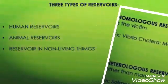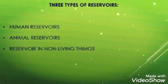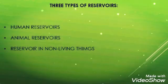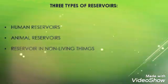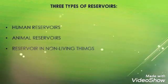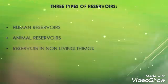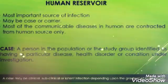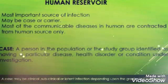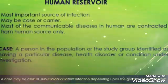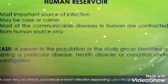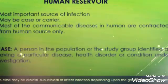There are mainly three types of reservoirs: human reservoirs, animal reservoirs, and reservoirs in non-living things. A reservoir is where bacteria, pathogens, and viruses sit and make their family — they divide and grow from 2 to 4, 4 to 8, and so on. Human reservoir is the most important source of infection and may be a case or carrier. Most communicable diseases in humans are contracted from human sources, as most infections sit on the human body and get multiplied and transferred from one person to another.